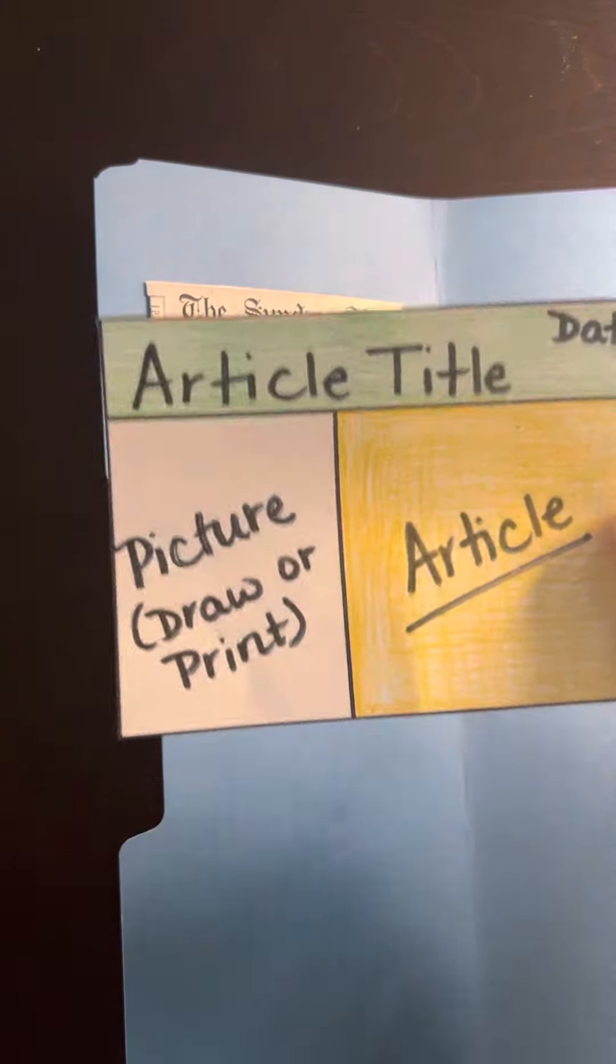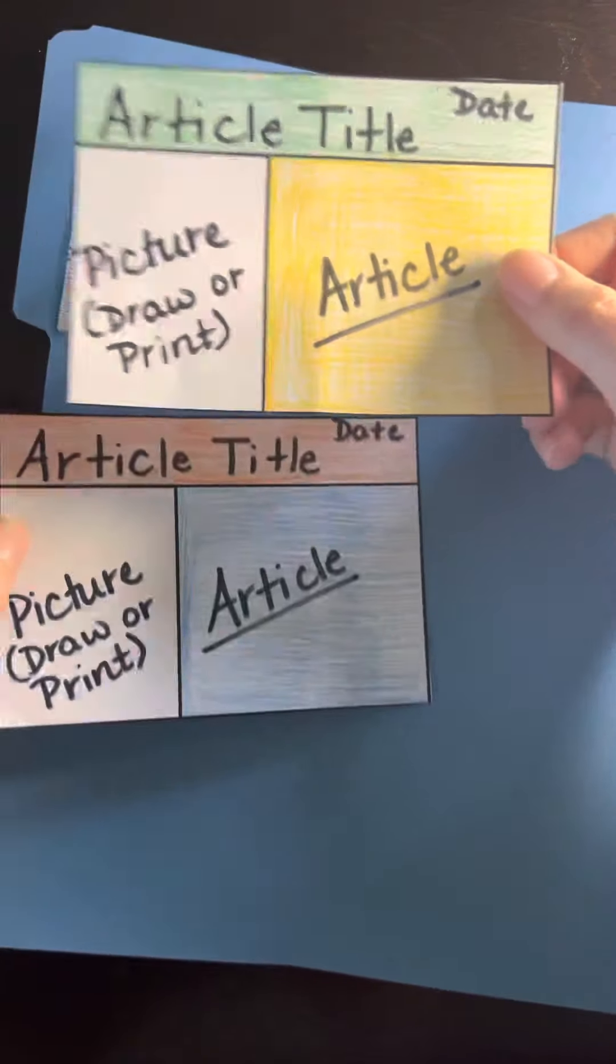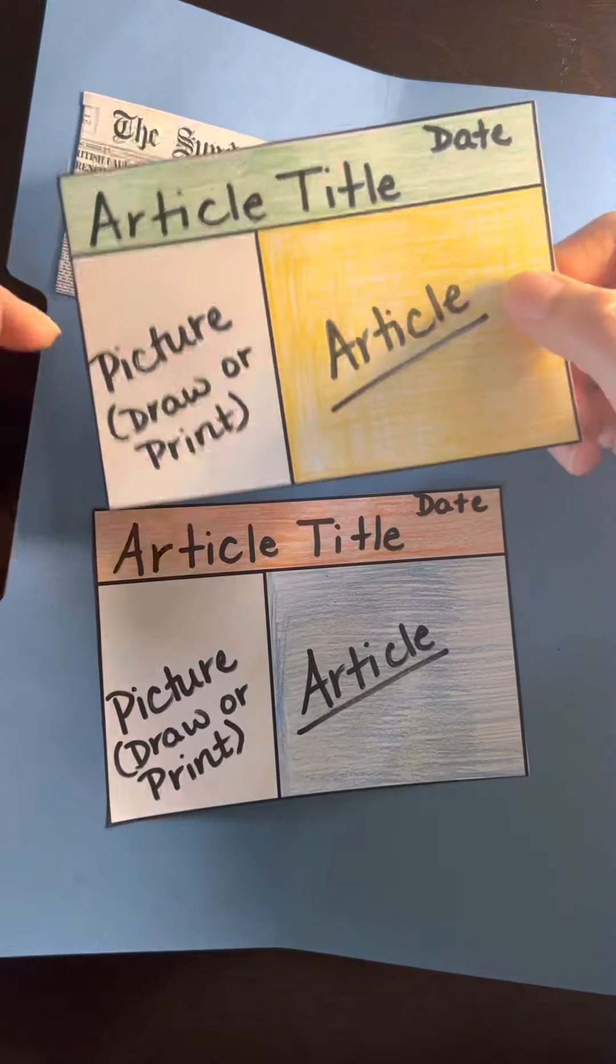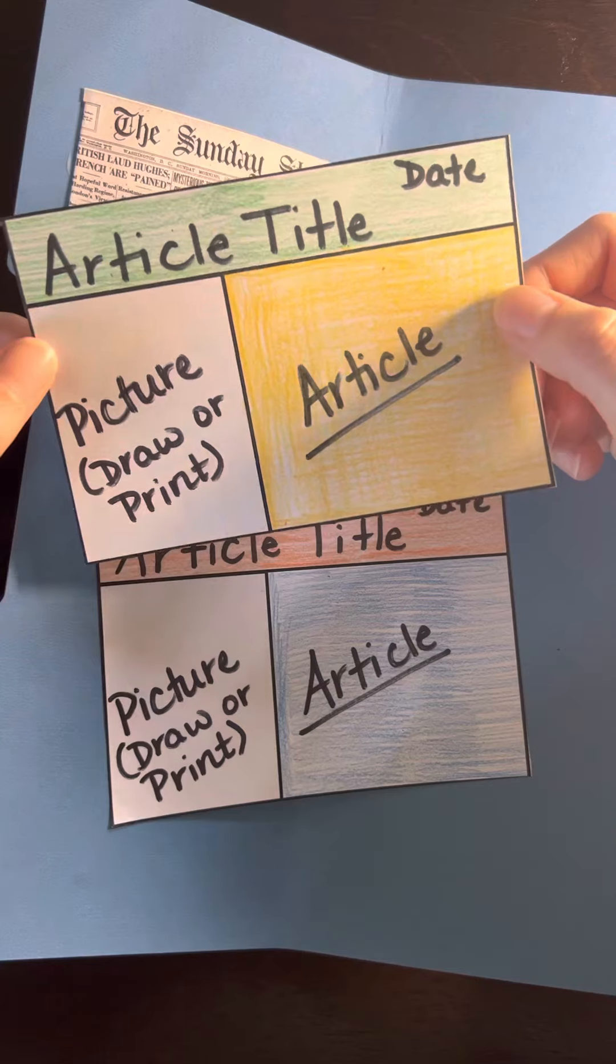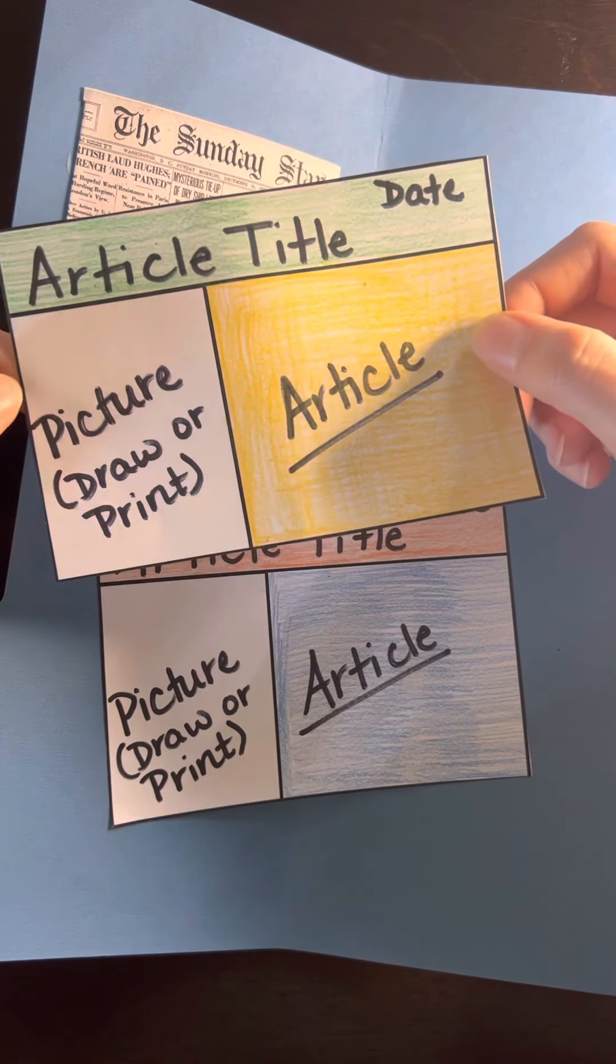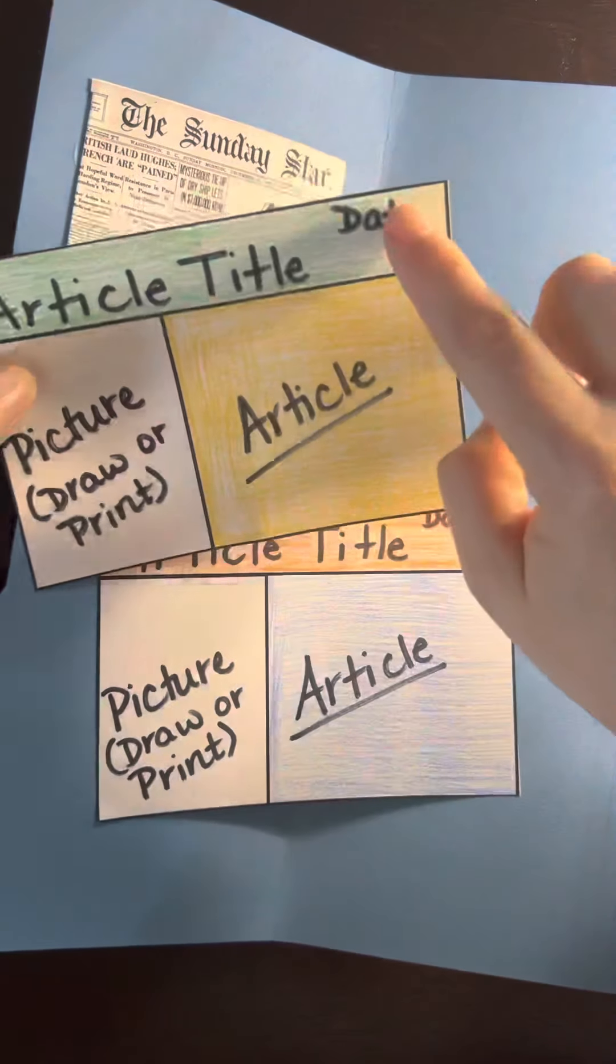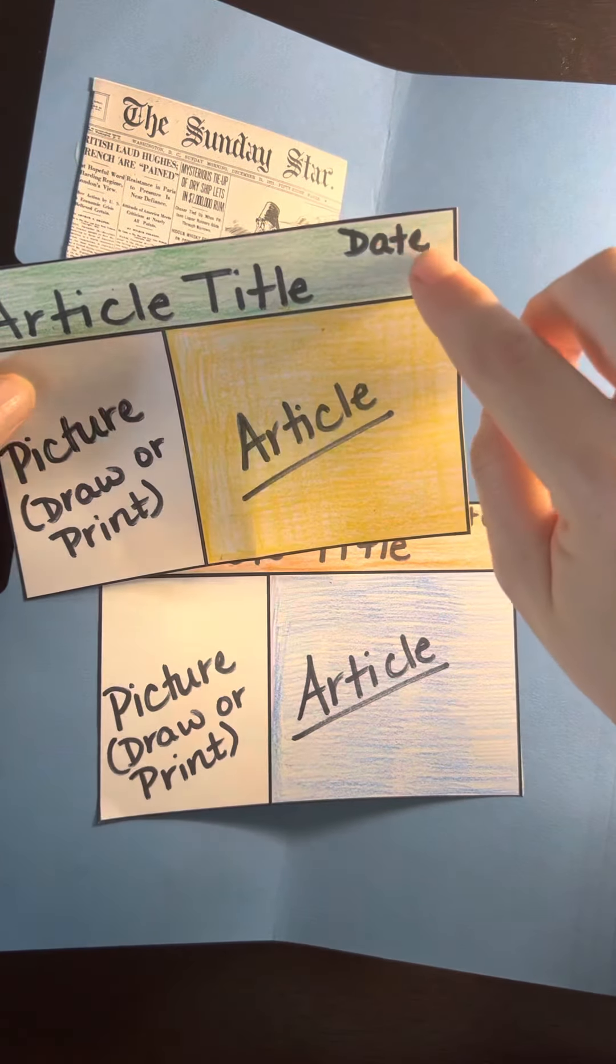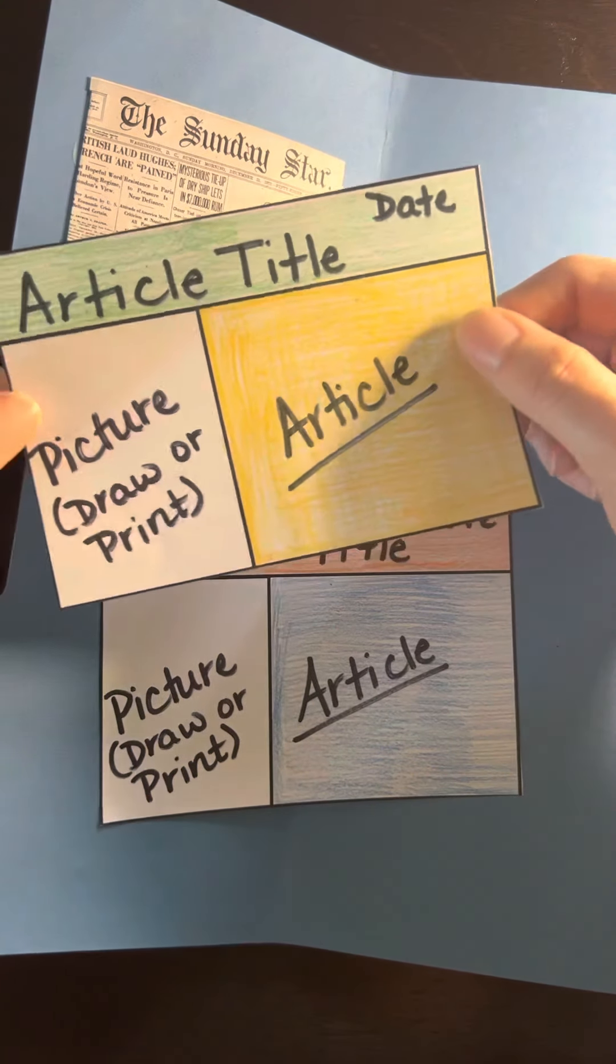You're going to take your two newspaper articles that you picked out. Remember it's going to be something that changed the state of Indiana significantly. So some big thing that happened in the state of Indiana in our history and you'll put the article title. Just the date, either month and day or the month and the year or just the year if it was something really big.